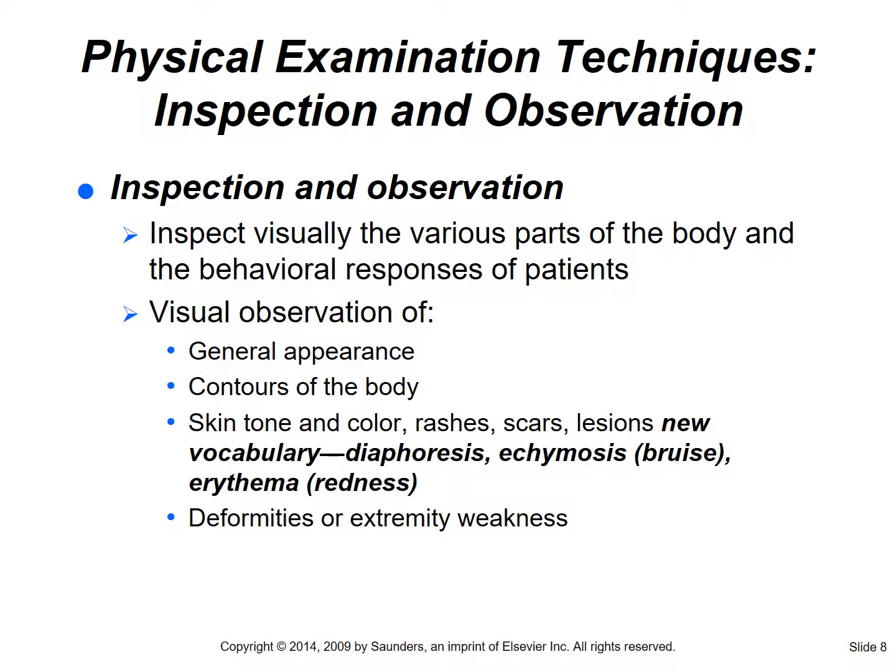One of the assessment techniques is inspection and observation - these go together. This is hands-off; we are looking and observing with our eyes. We're looking at general appearance, contours of the body, the skin - color, rashes, scars, lesions, diaphoresis (sweating), ecchymosis (bruising), erythema (redness). Please look these vocabulary words up in your book - knowing the terminology and what you're looking for is what will help you with the head-to-toe assessment.